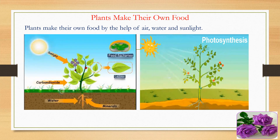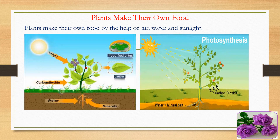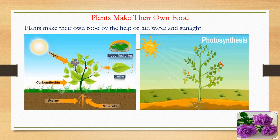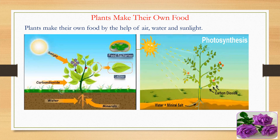Plants make their own food by the help of air, water, and sunlight. This process is called photosynthesis. In the picture, you can see plants get sunlight. They get water from the soil — roots take the water — and from the atmosphere they take air, such as carbon dioxide, and they give out oxygen for us.